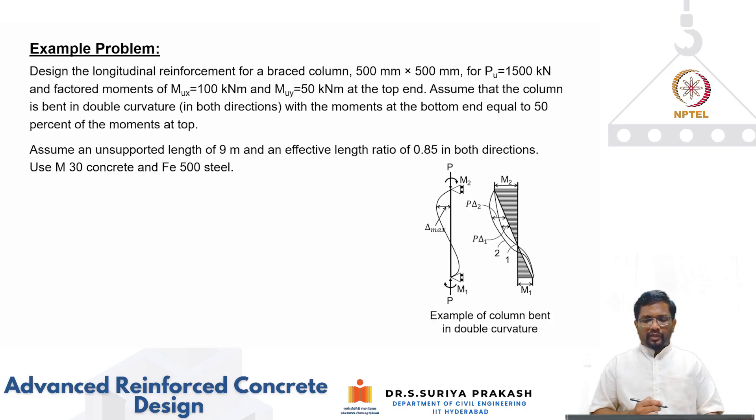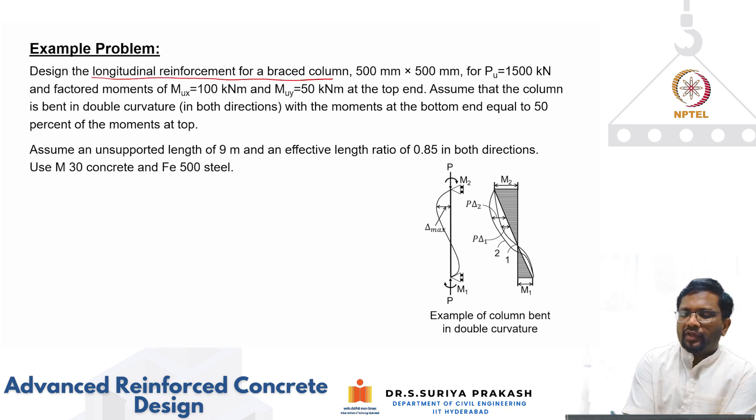Now let us quickly run one example problem and here we are going to account for slenderness. We need to design the longitudinal reinforcement for a braced column which is 500 mm by 500 mm which is having an axial compression of 1500 kN and bending moments of 100 kNm and 50 kNm about x and y axis at the top end.